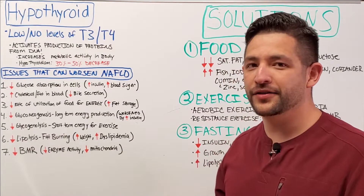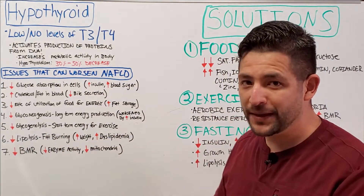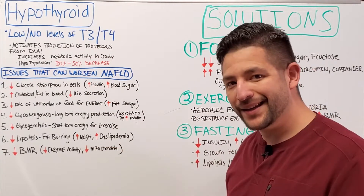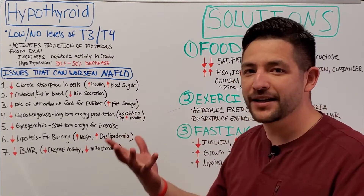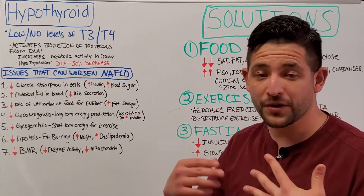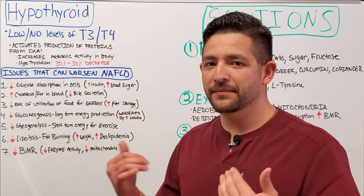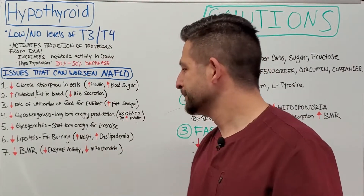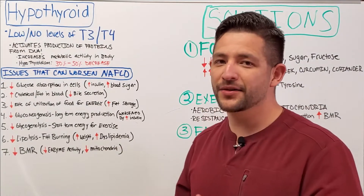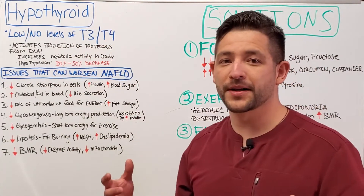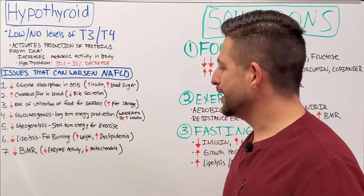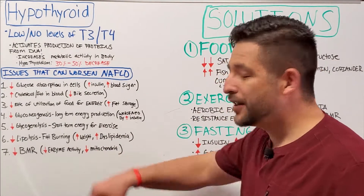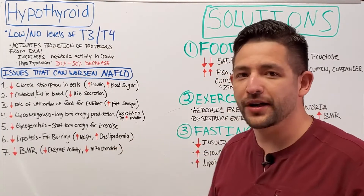Your body's ability to burn fat will also be inhibited, which is a problem because of the lack of T3 and the rise of insulin levels, contributing to weight gain and dyslipidemia — the excess amount of fat in your blood — which contributes to inflammation and worsening of a fatty liver. Finally, your BMR, your basal metabolic rate — the amount of calories you burn just to stay alive — will actually decrease due to a decrease in enzyme activity and overall metabolic activity.